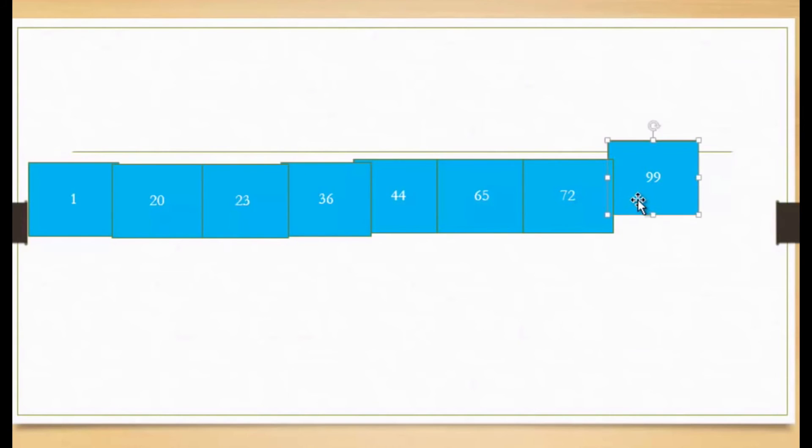Just going to delete those. And the algorithm, as you can see, is sorted from 1, 20, 23, 36, 44, 65, 72, and 99.